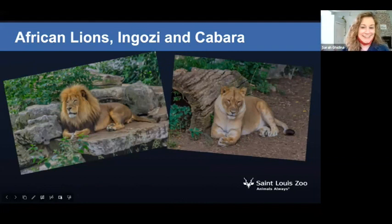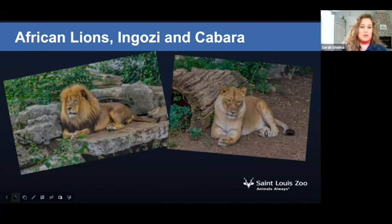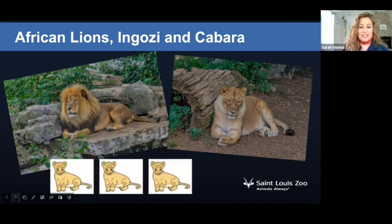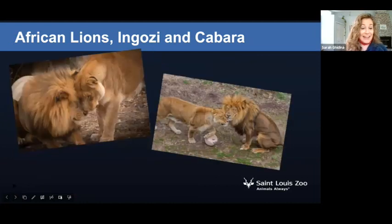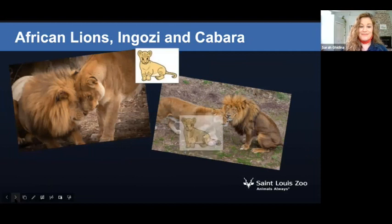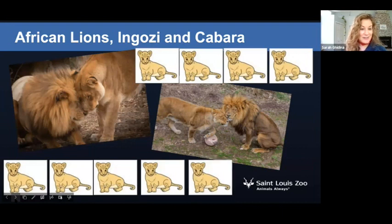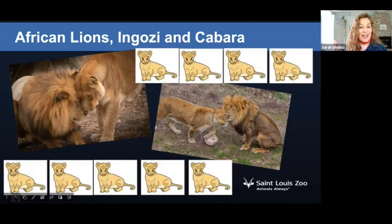Moving on to our African lions. We have a pair, Ngozi and Khabara, and they live together at the St. Louis Zoo. They've been together for many years and since then they have produced three cubs. Those cubs have since gone on to live at other zoos and have had children of their own. Right now Khabara and Ngozi are the grandparents of nine lions, and some of those children have had cubs of their own, making Ngozi and Khabara actually great-grandparents. Their family tree has gotten really big — they are an awesome animal parent couple.